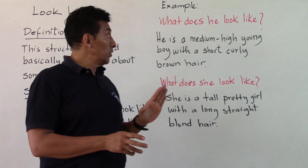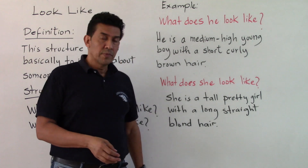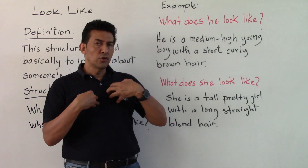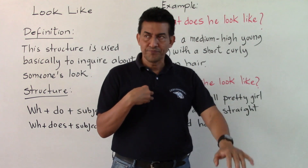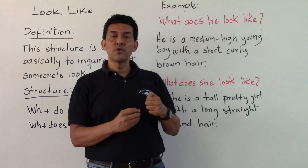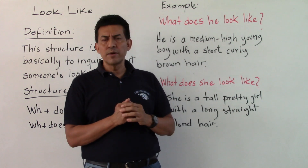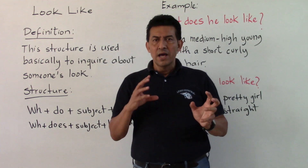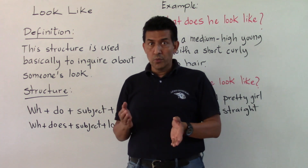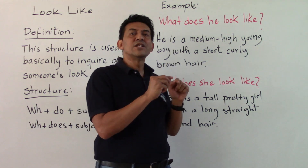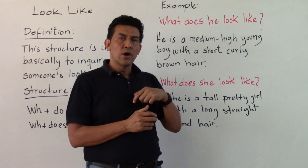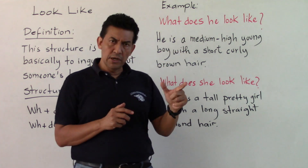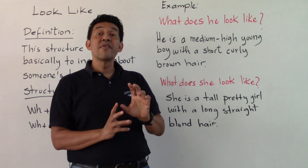The first example that we have here is a question: 'What does she look like?' We use this when we are talking about someone we have never seen before, when we have no idea who they are talking about. So that is why we ask this question. In case it is 'he,' we say 'What does he look like?'